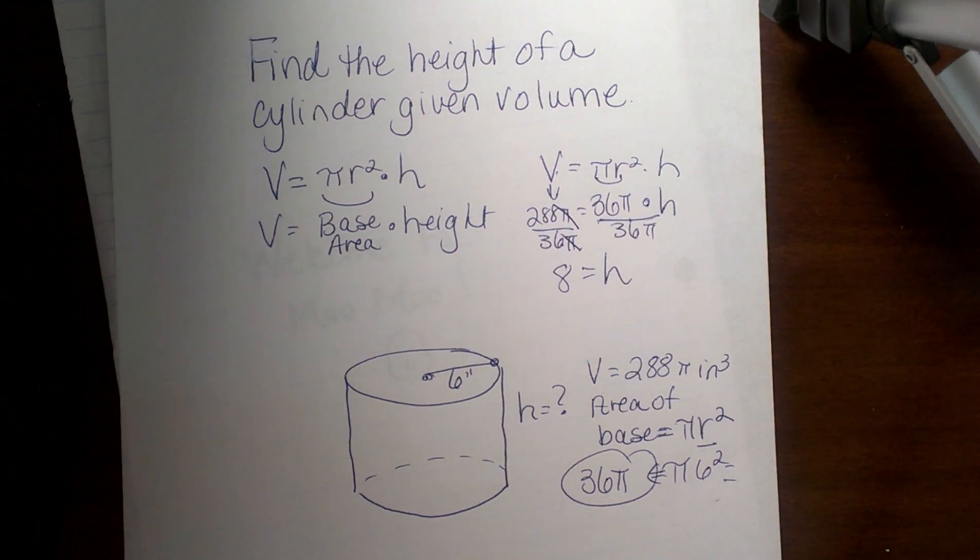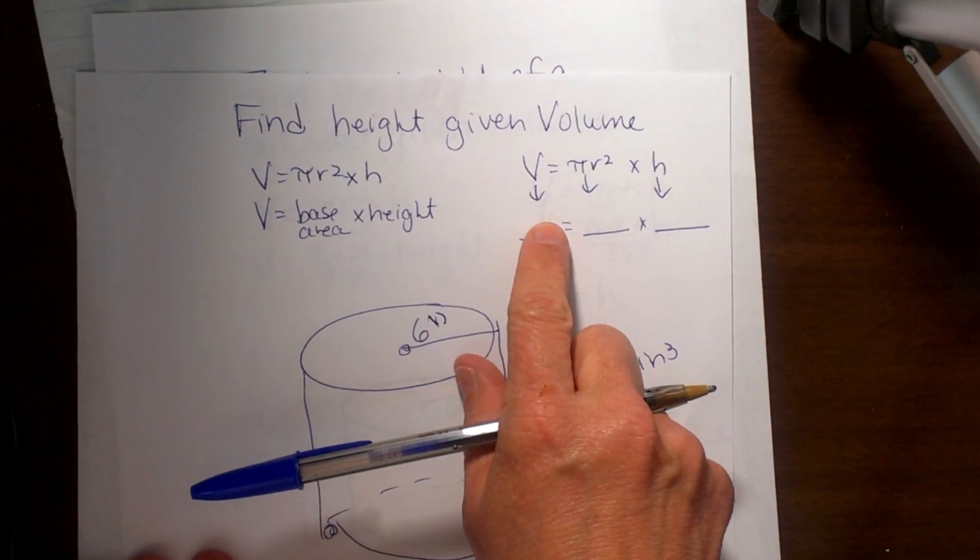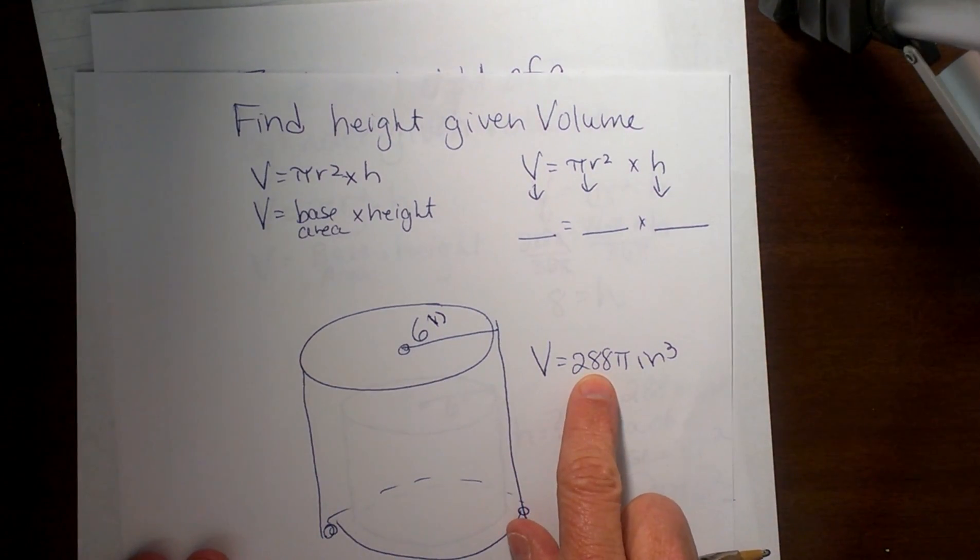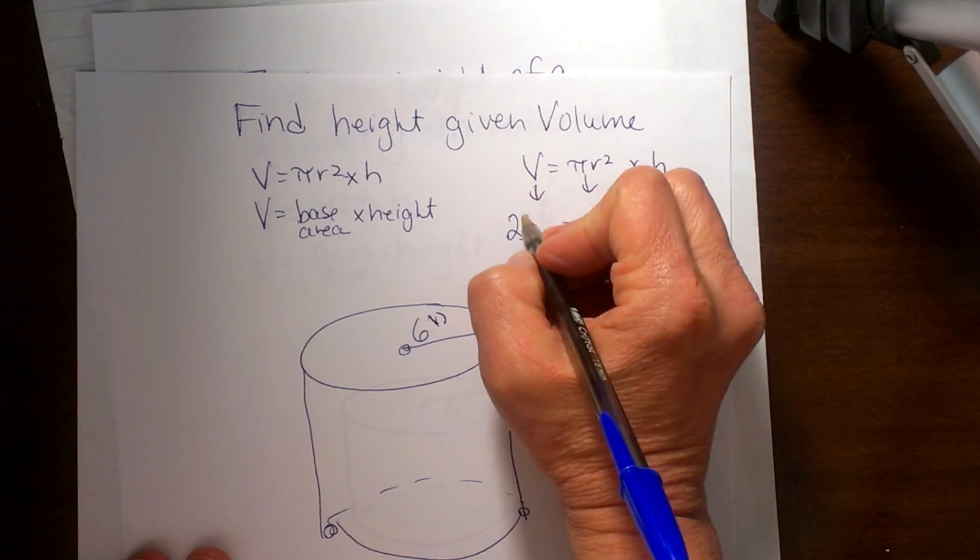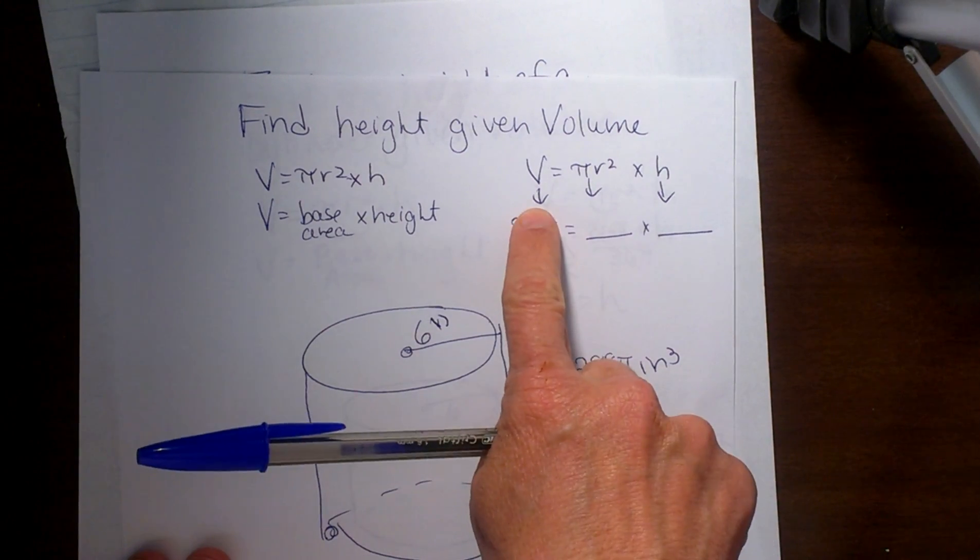So the first thing we need to do is start with a blank sheet. Let's start plugging in what we know. We are given that the volume is 288 pi. So I am just taking that volume and plugging in here.